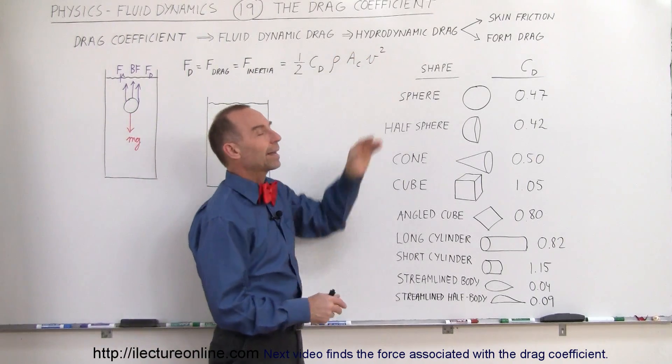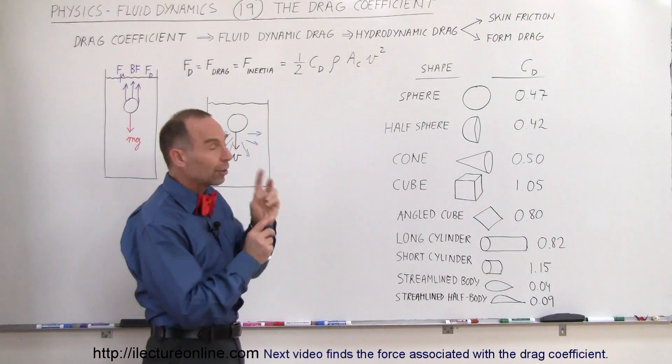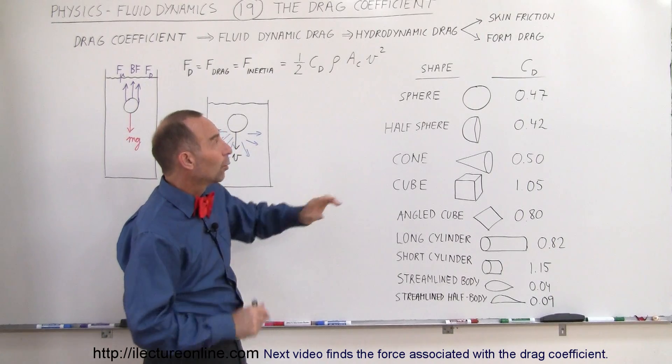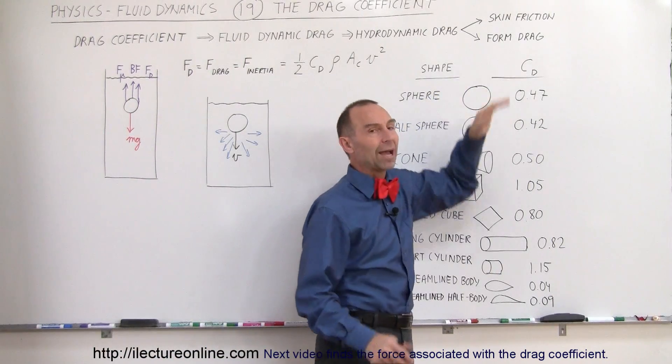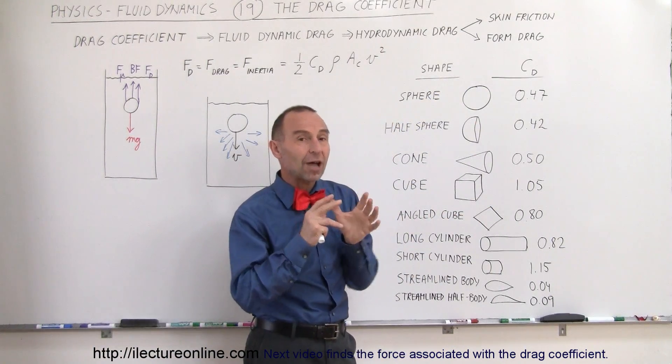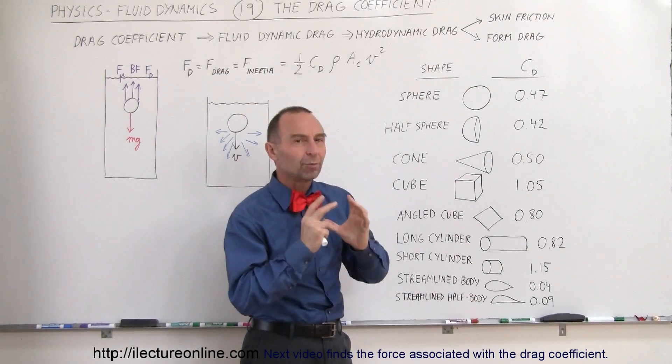It's also called the hydrodynamic drag and it's particularly dependent on two factors on the object. One of them is what we call the form drag. The most important part of the object is the shape of the object, the form of the object.